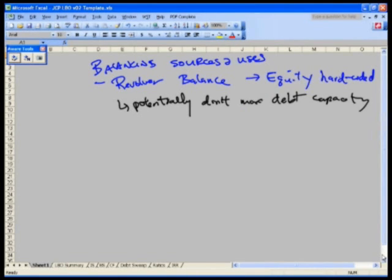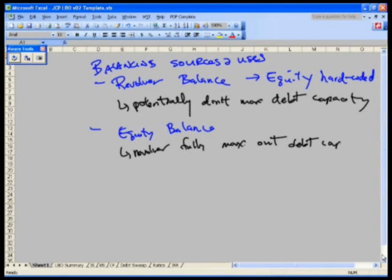Potentially don't max debt capacity. The second way, which is my personal preferred method, is to have the equity balance. Why? Because we're first going to have the revolver fully max out the debt capacity. Now, we have another constraint here. The other constraint is simply that, as you may recall, we cannot let the revolver balance. The revolver has a cap.